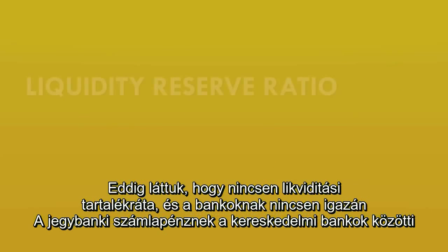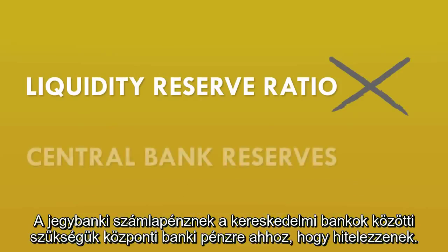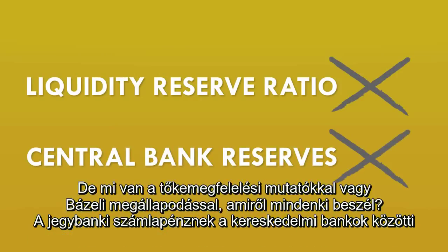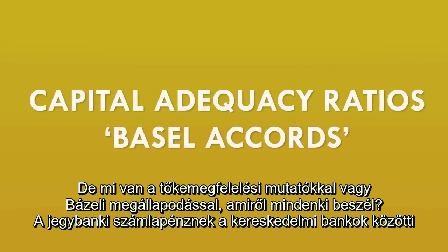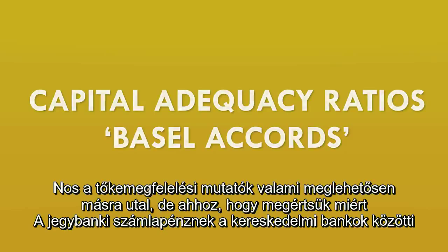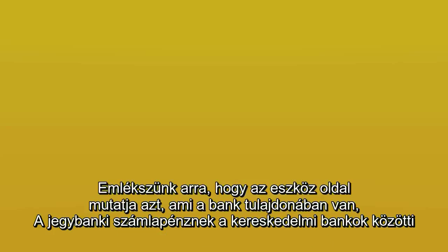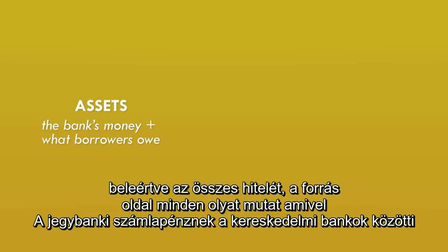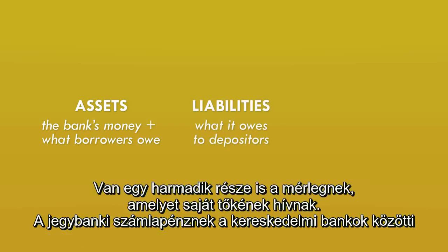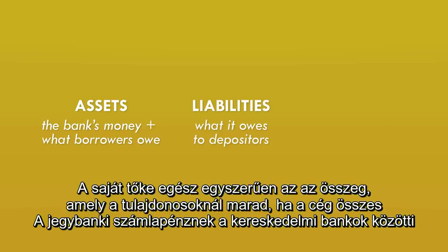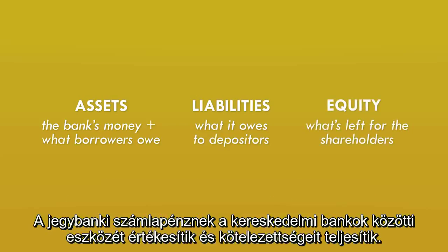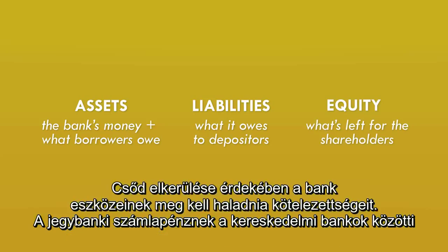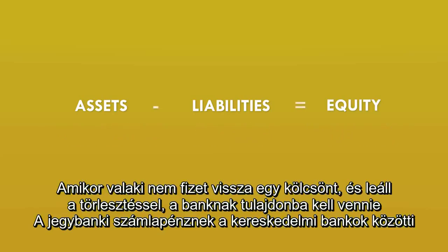So far we've seen that there is no liquidity reserve ratio and that banks don't really need central bank reserves in order to lend. What about the capital adequacy ratios, or Basel Accords, that everyone's talking about? Well, the capital adequacy ratios relate to something quite different. To understand why, we need to look at the balance sheets again. The assets side of the balance sheet shows everything the bank owns, including all its loans and mortgages. The liabilities side shows everything the bank owes to other people or companies. There's also a third part — shareholder equity — which is simply what's left for the owners when all assets are sold and all liabilities are paid off.